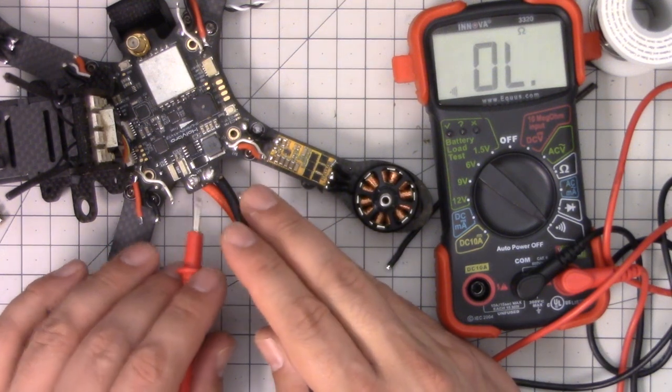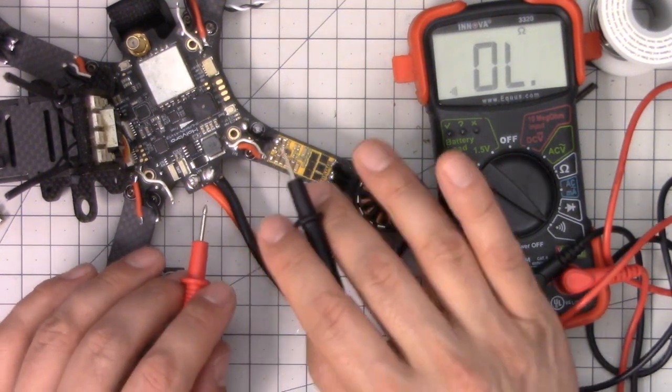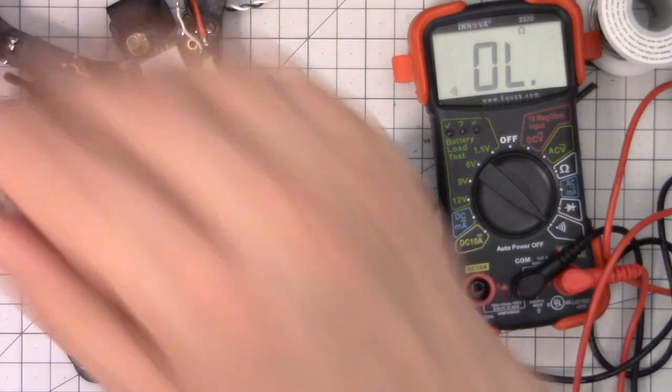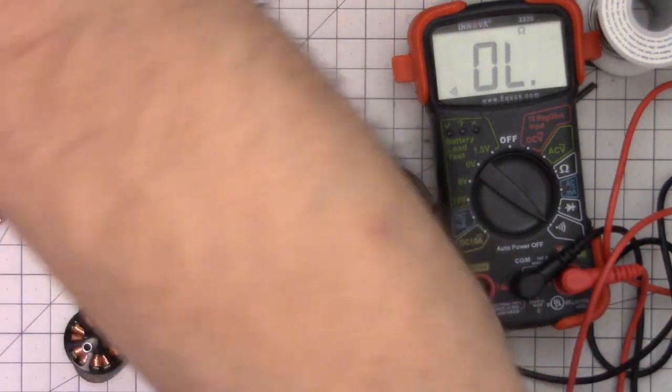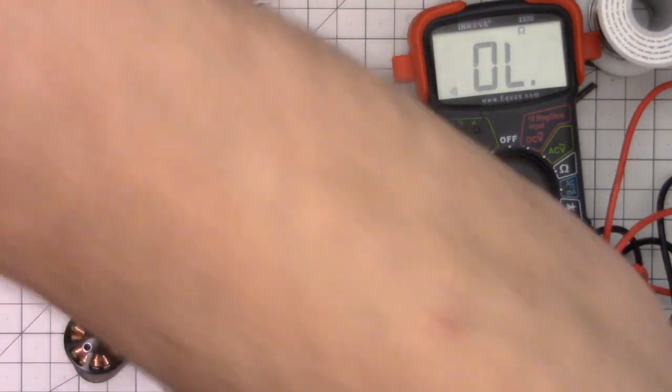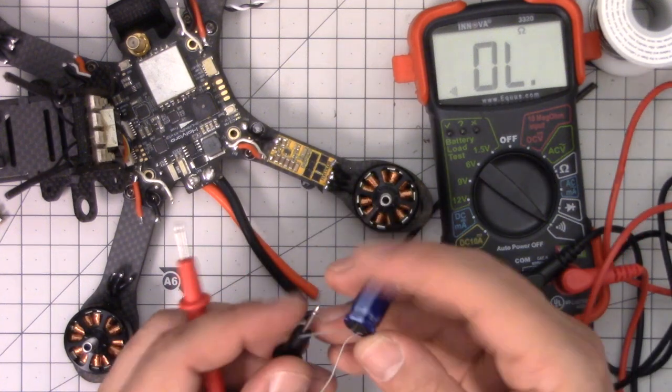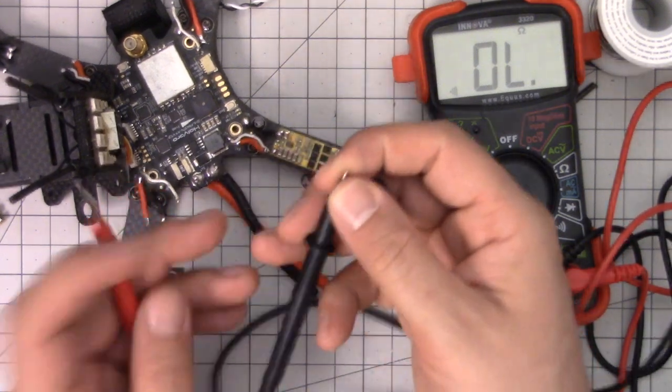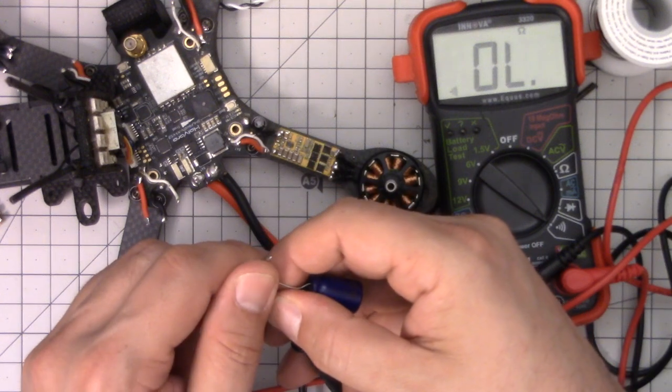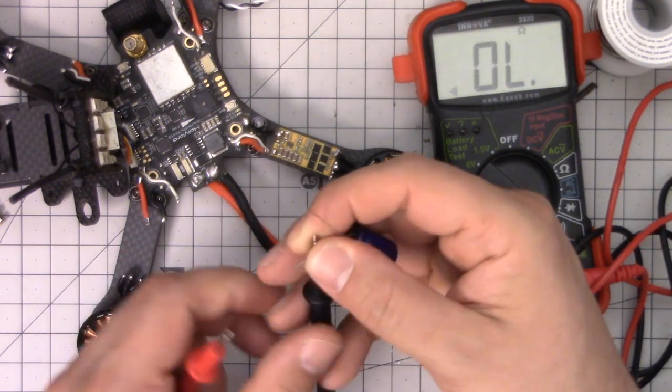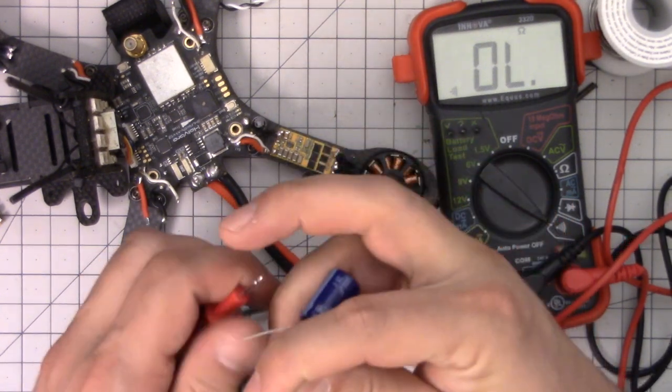The exception to that rule is if you have a capacitor. And many of our quadcopters do have capacitors on them. If you do have a capacitor, what you'll find is that when you apply the leads one way you get nothing. When you apply the leads the other way, you get a beep very briefly and then it stops.